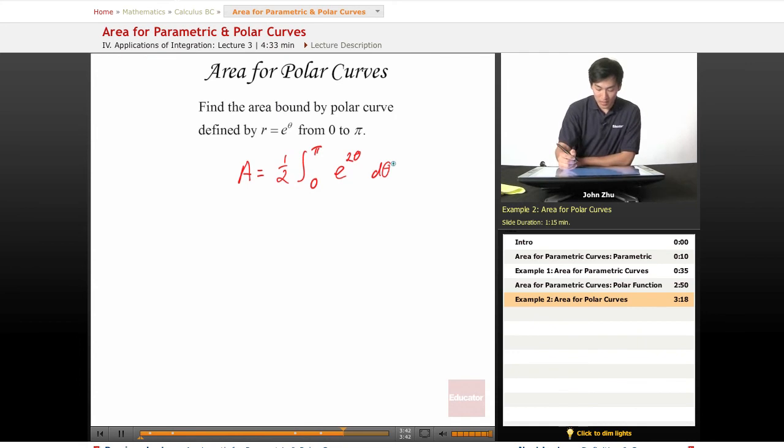So e to the 2 theta d theta, that simply equals one-half e to the 2 theta, evaluated from 0 to pi.